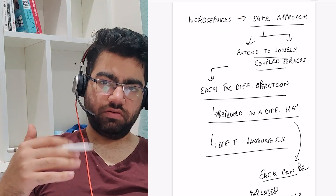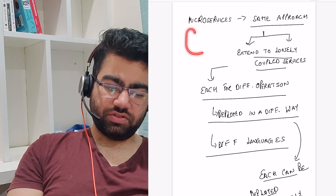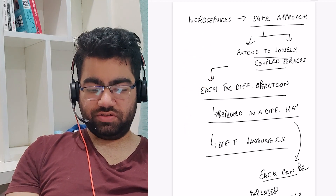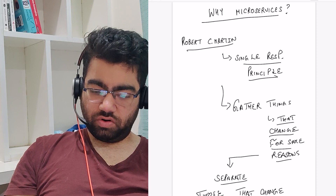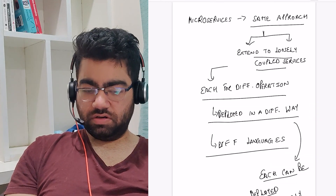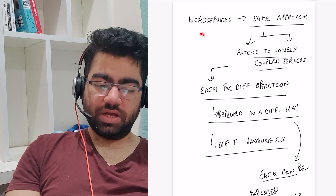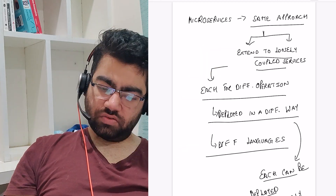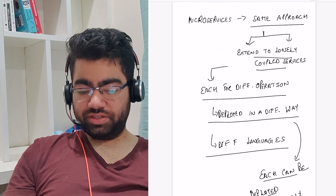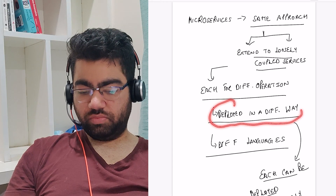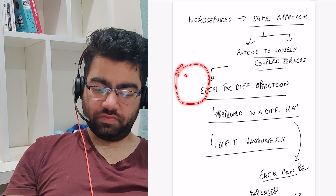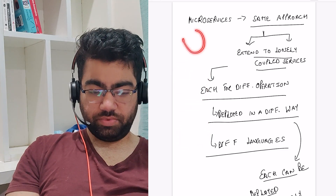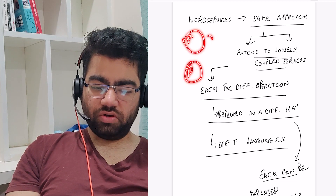The opposite of a monolithic service is a microservice architecture. It says that things which have different uses should be in different services. So you would have a separate service for payment and a separate service for booking, and so on. Each service has a different use. The basic benefit is that each service can be deployed in a different way — for example, you can deploy a payment service independently from a booking service.